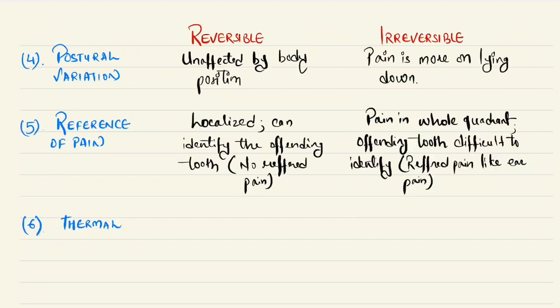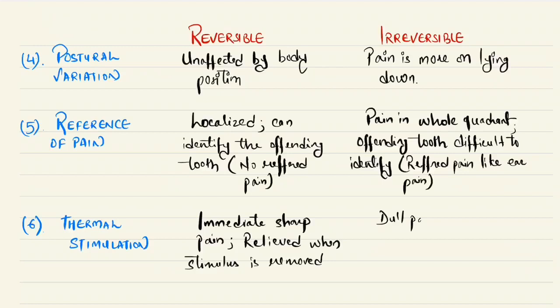Now the sixth identification feature is thermal stimulation. We can check through thermal stimulation like heat test. If there is immediate sharp pain on heat test which is relieved when heat is removed, then it is reversible.